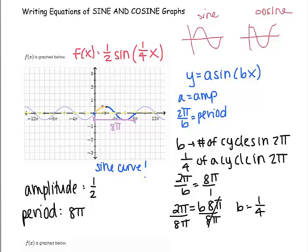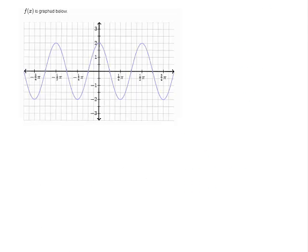Let's try another one. So again, the first thing we're going to have to figure out is whether or not we have sine or cosine. So remember, sine is the little wave.